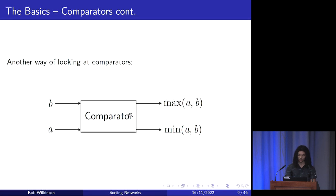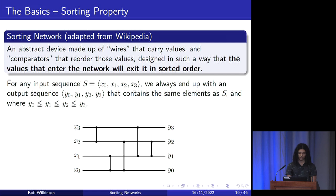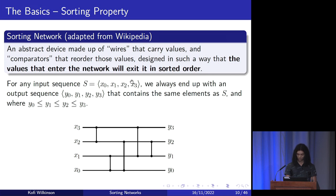Another way of looking at comparators: if a comparator takes in two values A and B, it will place the minimum of the two on the bottom wire and the larger on the top. The sorting property of a sorting network is what actually makes it useful. For any input sequence S, we always end up with an output sequence that contains the same elements as our input sequence, and this output is in sorted order.